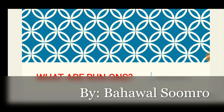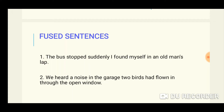There are two types of run-on sentences: one is fused sentences and another one is comma splices. In fused sentences, two sentences are given — for example, 'The bus stopped suddenly I found myself in an old man's lap.' This is a run-on in which two ideas are given without any kind of break.